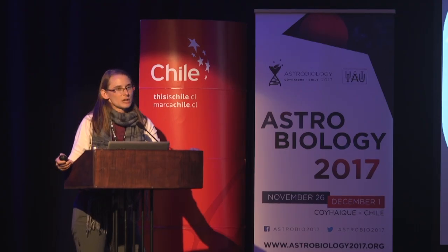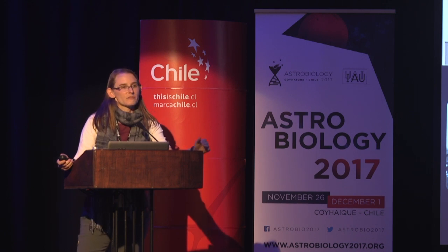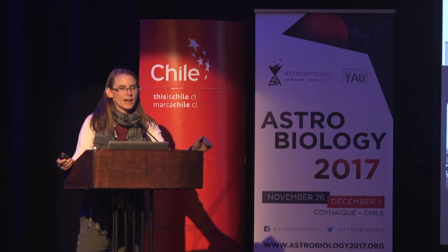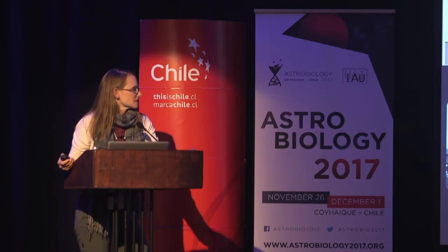In these environments, we want to see how fatty acids are preserved and detectable in these different aged environments. To give you a schematic diagram of how hot springs may look, we have the vent area, the throat where the water comes out, and a variety of specific morphologies that form in the sinter as the water erupts out of the vent and flows down gradient through a proximal slope into channels, into a mid-apron pool system, and then finally into a distal apron.